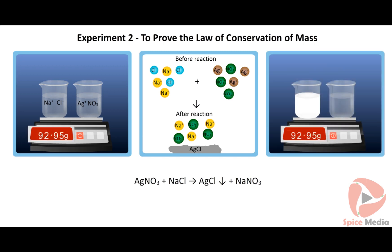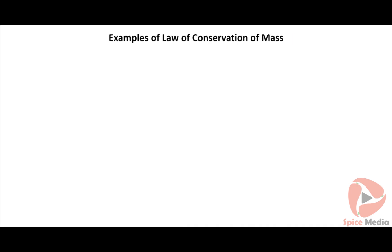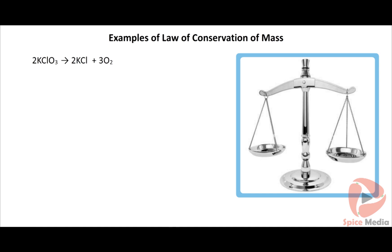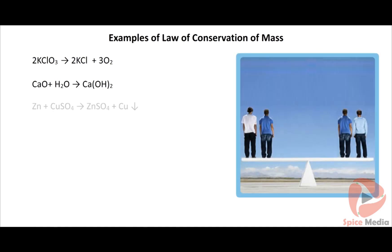Weigh the whole apparatus again — we can infer that there is no change in weight before and after the reaction. More examples: potassium chlorate is converted to potassium chloride and oxygen; calcium oxide reacts with water to give calcium hydroxide; zinc reacts with copper sulfate to give zinc sulfate and copper. In all these changes, the sum of the weights of reactants is exactly equal to the sum of the weights of the products.